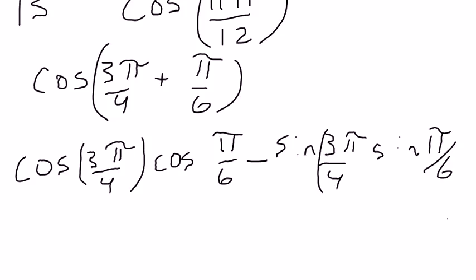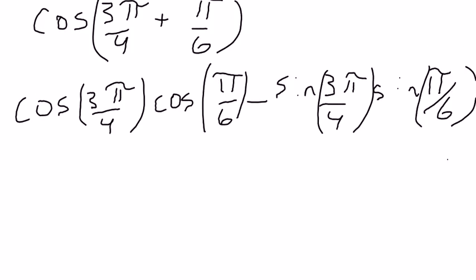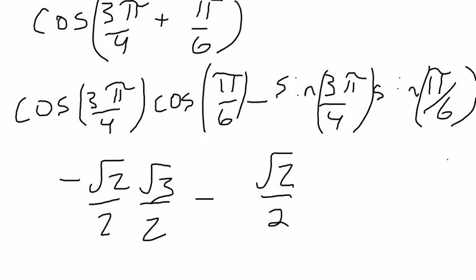We can look these up on our sheet. Cosine of 3π over 4 is negative square root of 2 over 2. The cosine of π over 6 is square root of 3 over 2 minus the sine of 3π over 4 which is square root of 2 over 2, and the sine of π over 6 which is 1 half.